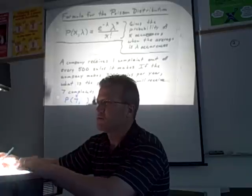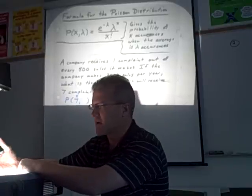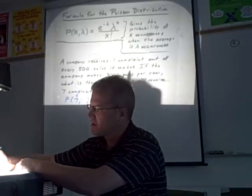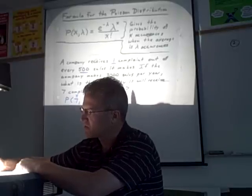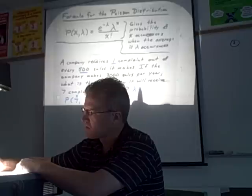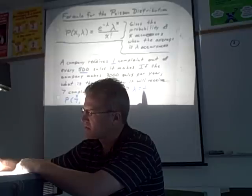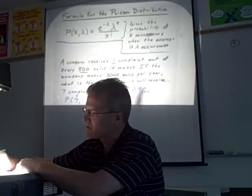Now lambda would be the average number of complaints they should expect. They get one complaint out of every 500 sales. So on average, they get one complaint out of 500 sales. But here we're talking about 3,000 sales.